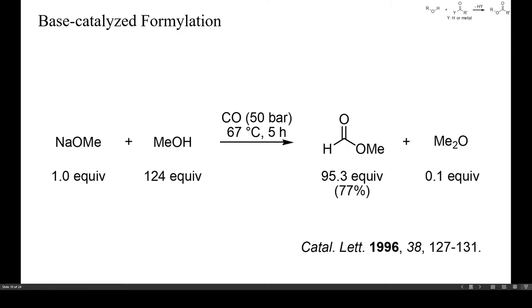This is an example of the direct, base-catalyzed formylation of methanol with carbon monoxide. Methylformate is produced industrially this way, but the reaction is reversible and complete conversions are difficult to attain.